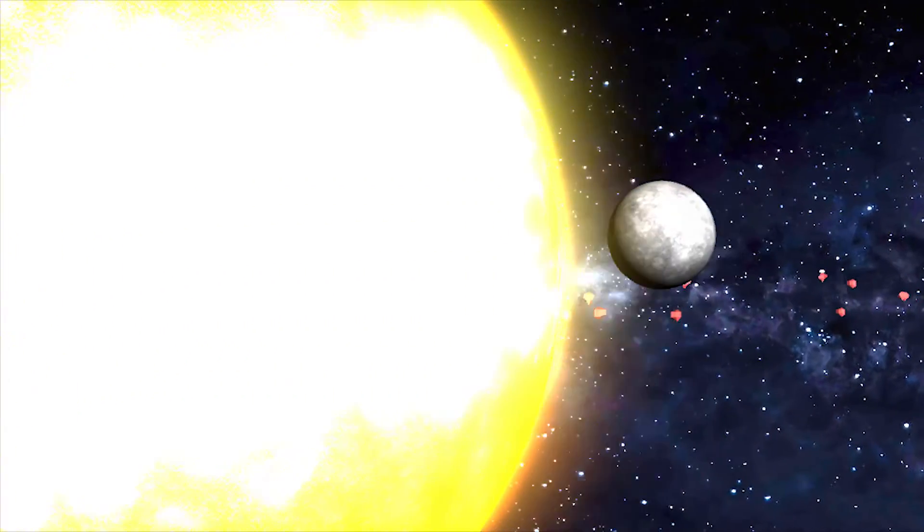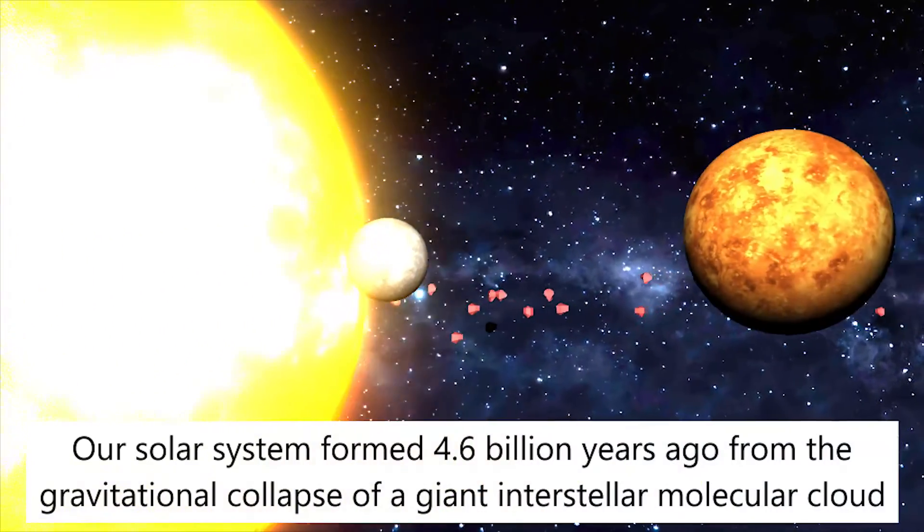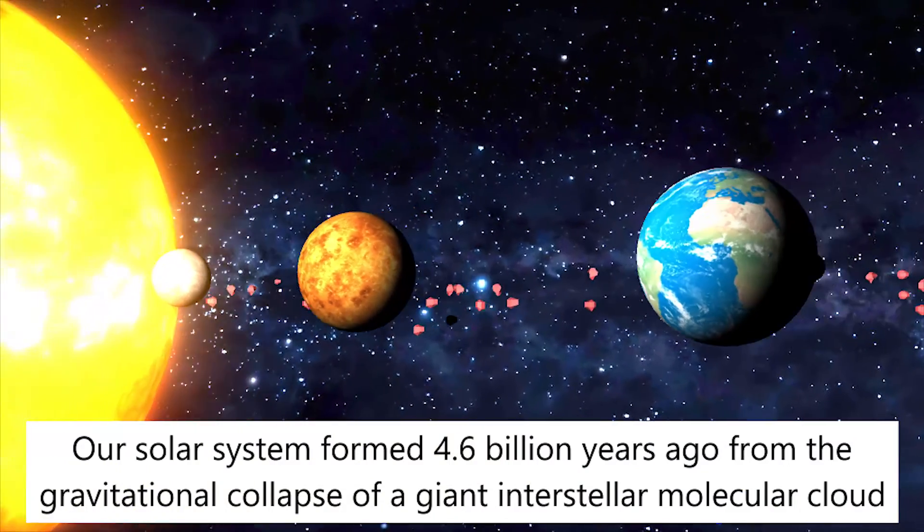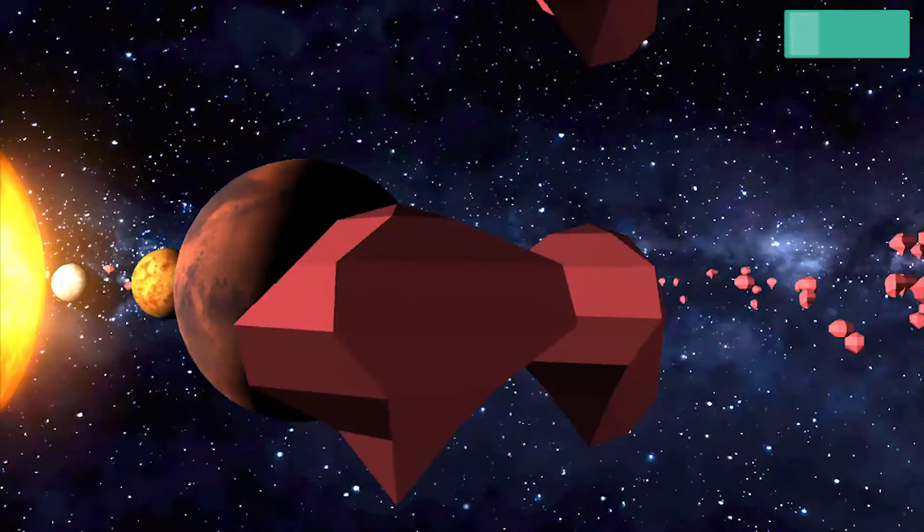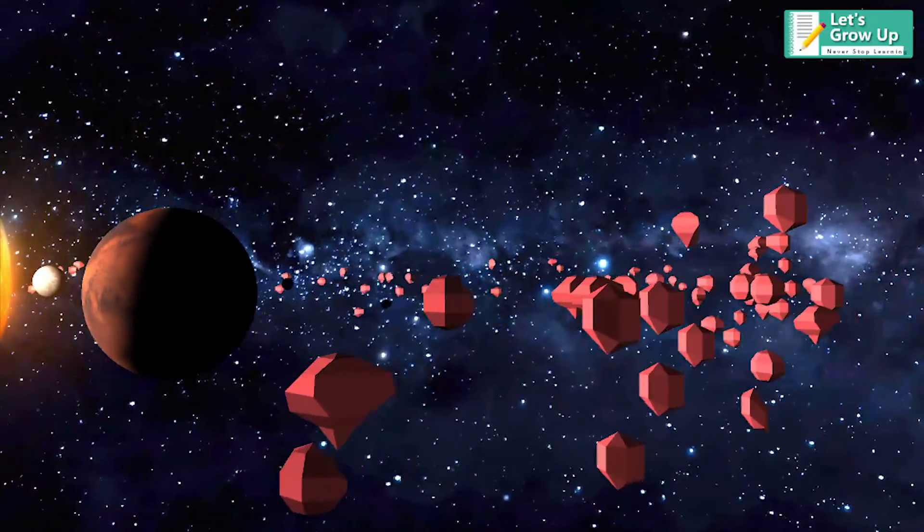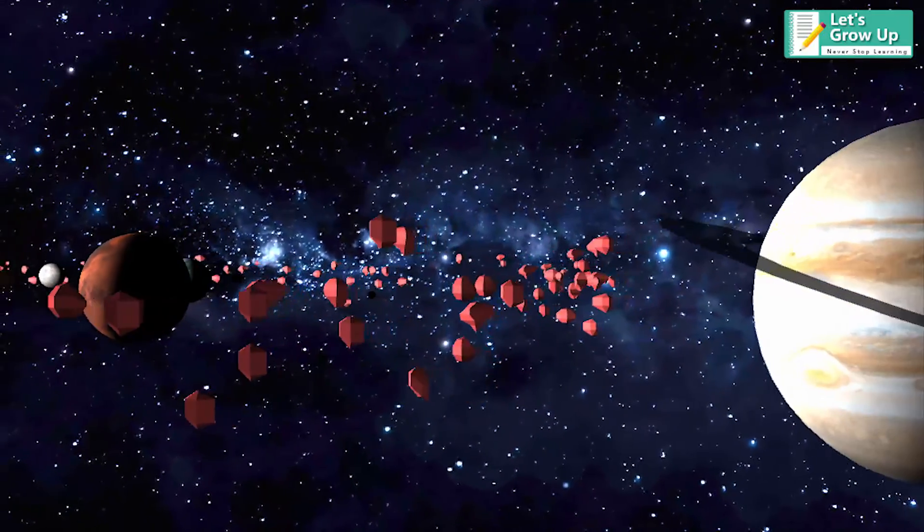Our solar system consists of an average star and it formed 4.6 billion years ago from the gravitational collapse of a giant interstellar molecular cloud. The Sun is the richest source of electromagnetic energy, mostly in the form of heat and light in the solar system.